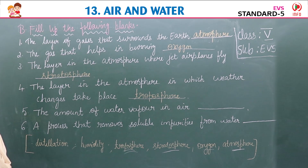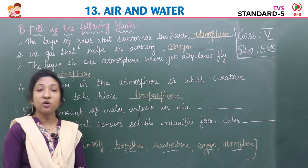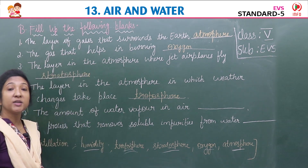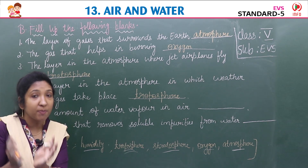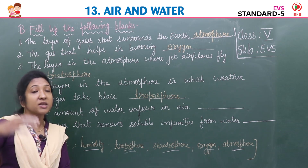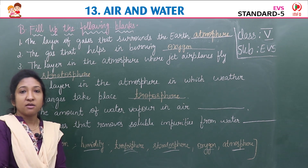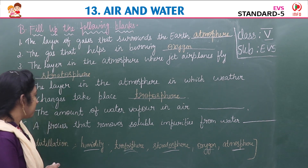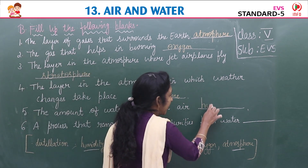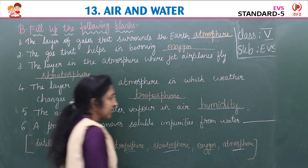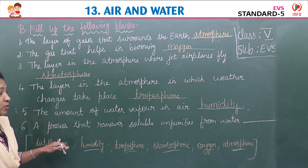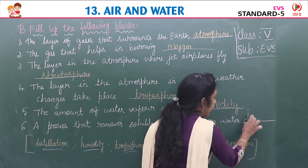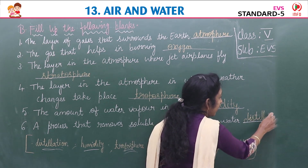Fifth blank: the amount of water vapor in air is called humidity — H-U-M-I-D-I-T-Y. If water vapor is more in the air, humidity will be higher, causing higher temperatures and sweating. Sixth blank: the process that removes soluble impurities from water is distillation — D-I-S-T-I-L-L-A-T-I-O-N.